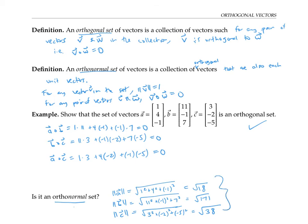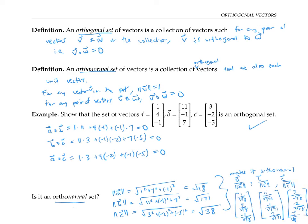But I can make it an orthonormal set by taking A and dividing it by its length, or multiplying it by one over its length, and same thing with B, and same thing with C. Those vectors, which are right out here, those vectors will each be a unit vector and they'll still be orthogonal to each other.